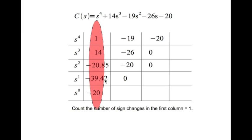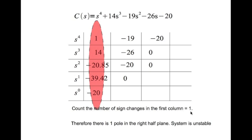Now we look at the first column and count the number of sign changes. The first entry is positive, the second is positive — no sign change. The third becomes negative — one sign change. The next two entries have no sign change. The number of sign changes in the first column is equal to 1. Therefore, there is one pole in the right half plane, and therefore the system is unstable.